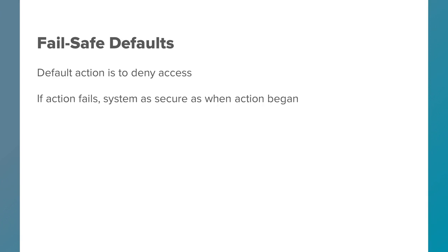Fail-safe defaults in the computer world covers two things. The first one is: by default, deny access. Explicitly give permissions. That way someone reading a program understands exactly what permissions are being given. Furthermore, if you grant permission by default and then turn it off, you may forget to turn it off. We see this a lot when people leave companies — often they leave accounts active for quite a while even though the worker is no longer there.